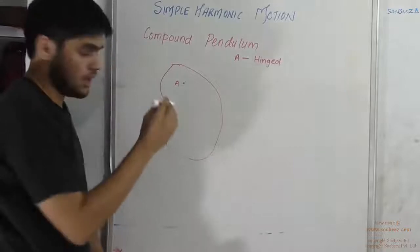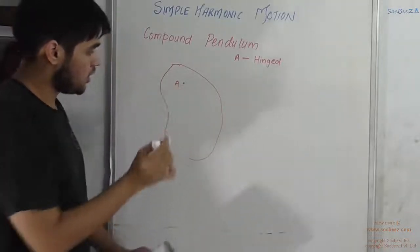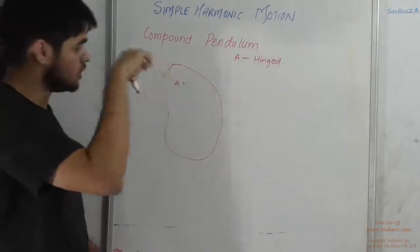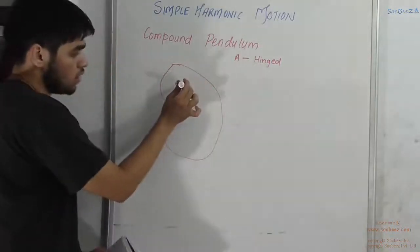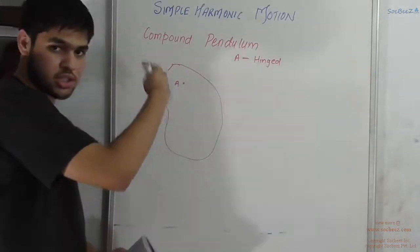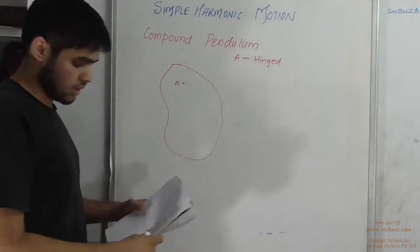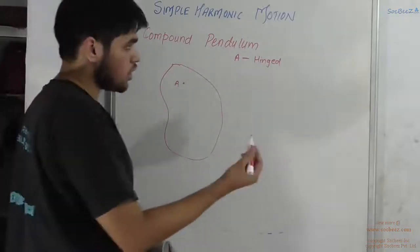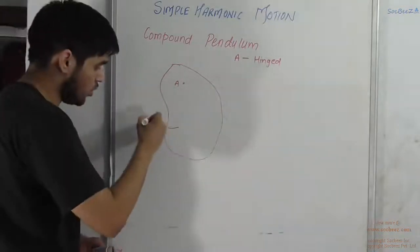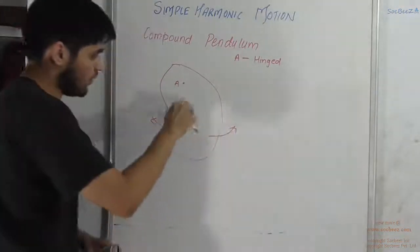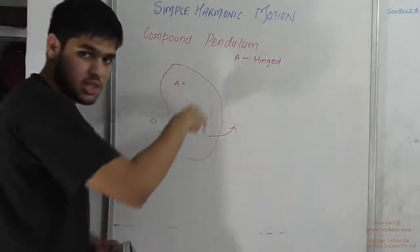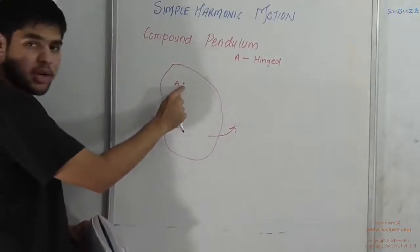An axis passing through point A and going into the plane of the body — around this axis, the mass can execute its motion. About this point it can move in this plane; it can swing to either side. So if I give it a push, it will start executing some type of motion which will be hinged about point A.